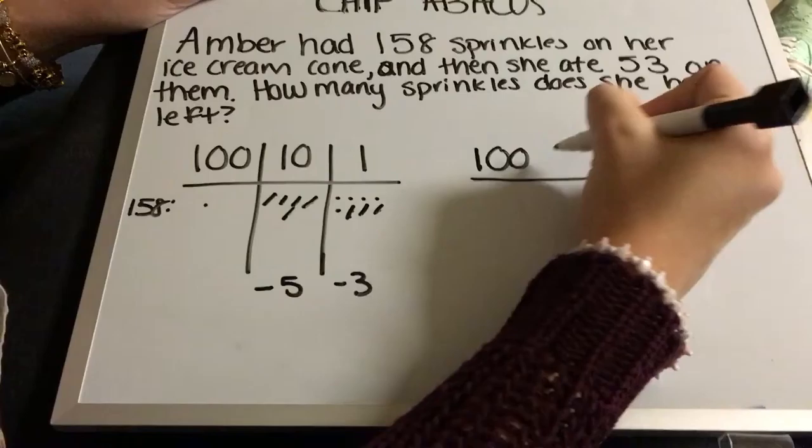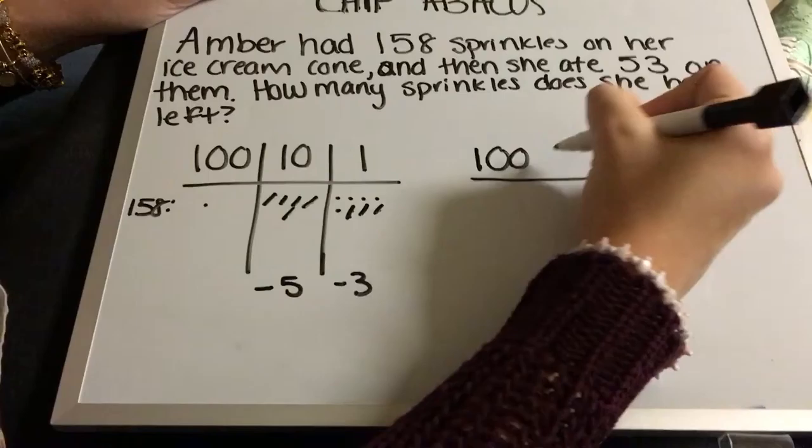So then we're going to rewrite it to 100, there's nothing left in this one, and 1, 2, 3, 4, 5 to get 105 sprinkles left. And that's the chip abacus for subtraction.